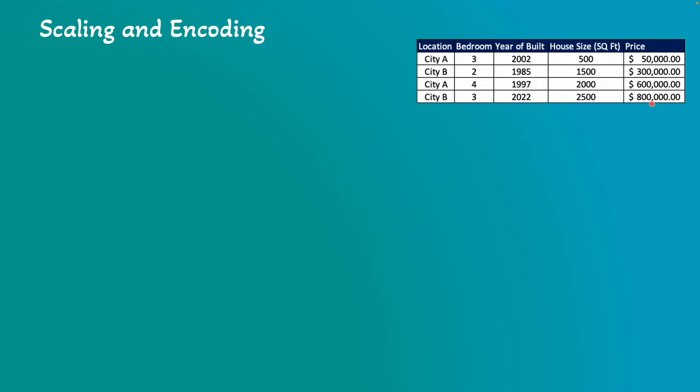This will ensure all the data points will contribute equally during model training. Min-max scaling is one of the techniques we can use to normalize the house prices in the range of 0 to 1. This will eliminate the value divergence.